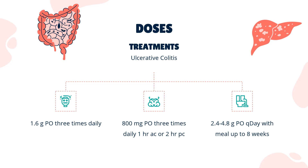Remission Maintenance: Apriso 1.5g PO once daily in the AM; Delzicol 1.6g/day PO in divided doses, 1 hour before or 2 hours after meals; Asacol 1.6g/day PO in divided doses, 1 hour before or 2 hours after meals; Lialda 2.4g PO once daily with food; Pentasa 1g PO 4x daily for up to 8 weeks.